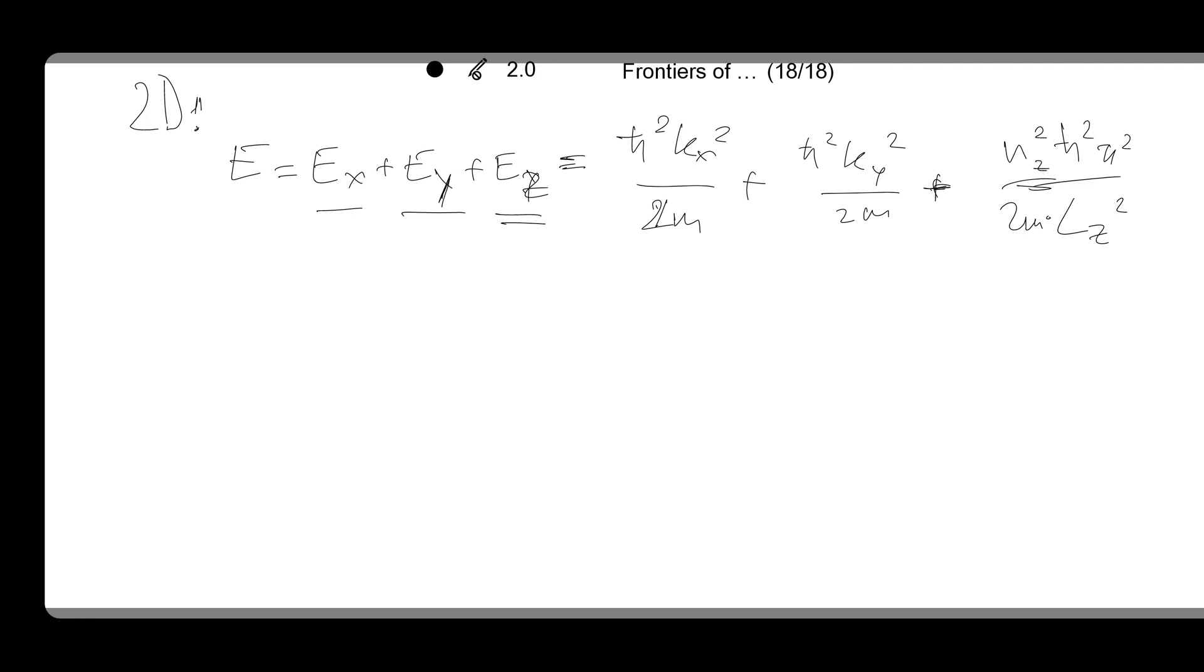You can use nz as the index here. So to calculate density of states, counting the z-mode is actually straightforward. You just count them one by one because they are more or less quantized. So just to highlight what this dispersion relation looks like.